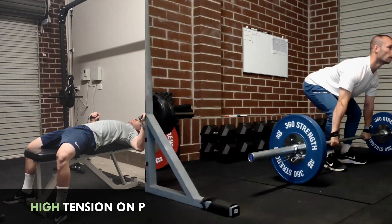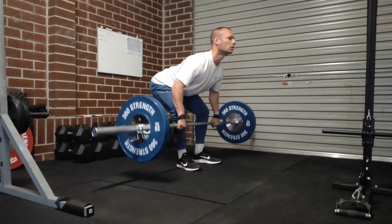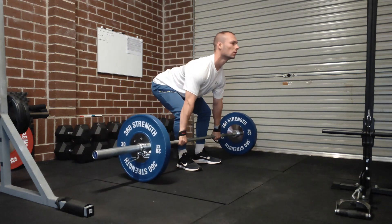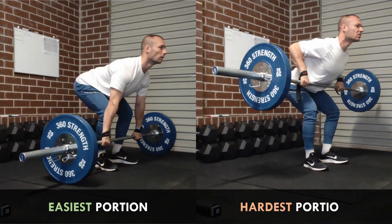Another exercise we can improve the tension curve of is the barbell row. This exercise has a fairly drastic tension curve where it is easiest at the bottom range when the arms are extended and hardest at the top range where the hands are closer to the body. While the resistance remains in the same line of pull for the entire exercise, this tension curve is a result of the anatomy and biomechanics of our pulling muscles. This is a natural occurrence for almost all horizontal and vertical pulls when the external load is constant.